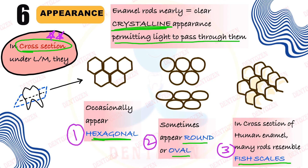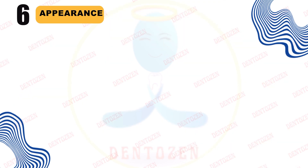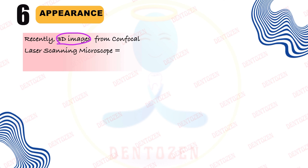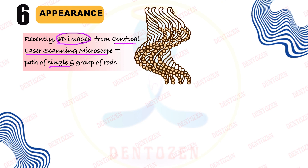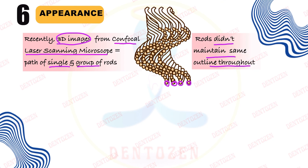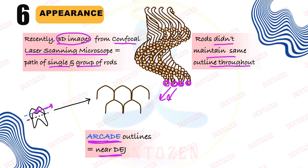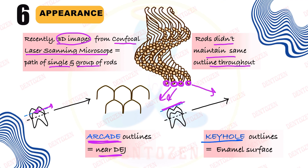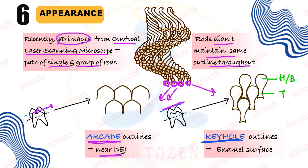We can see many different appearances — hexagonal, round or oval, and fish scale — in the cross section of enamel. More recently, three-dimensional images obtained from confocal laser scanning microscope have been reconstructed to study the path of these rods, both single rods and groups. It has been found that rods do not maintain the same outlines throughout the enamel. Near the dentino-enamel junction, the outlines appear as arcade outlines, while near the enamel surface they appear as keyhole outlines, which have two parts: the head or body, and the tail of the enamel rod.